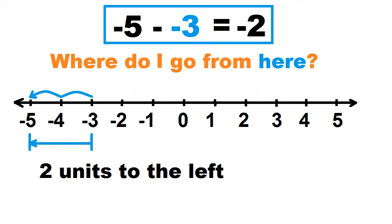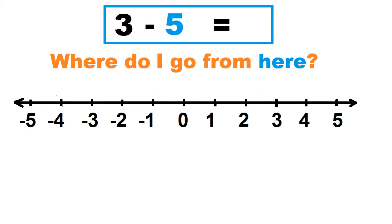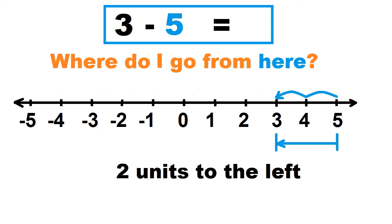Another example: 3 minus 5. Count the number of units from 5 to 3, and take note of the direction. To the right is positive, to the left is negative. Let's count: 1, 2. That's 2 units to the left. So 3 minus 5 equals negative 2.